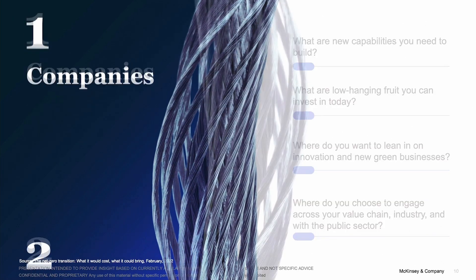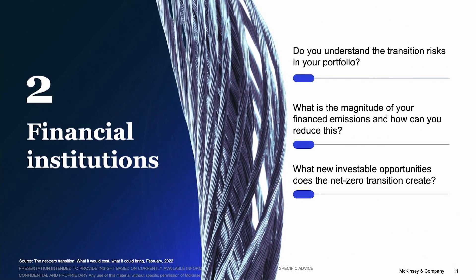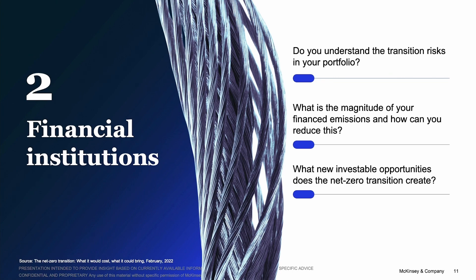For the financial institutions in the audience, capital will play a crucial role in the transition. I ask you: what capabilities do you need to build to measure how your portfolio is exposed to risk — for example, disproportionate exposure to sectors that could see declining demand, rising costs, as well as opportunities? Do you understand the magnitude of emissions that you finance? And do you have a glide path to reduce those emissions in a way that engages instead of retreats from the real economy?